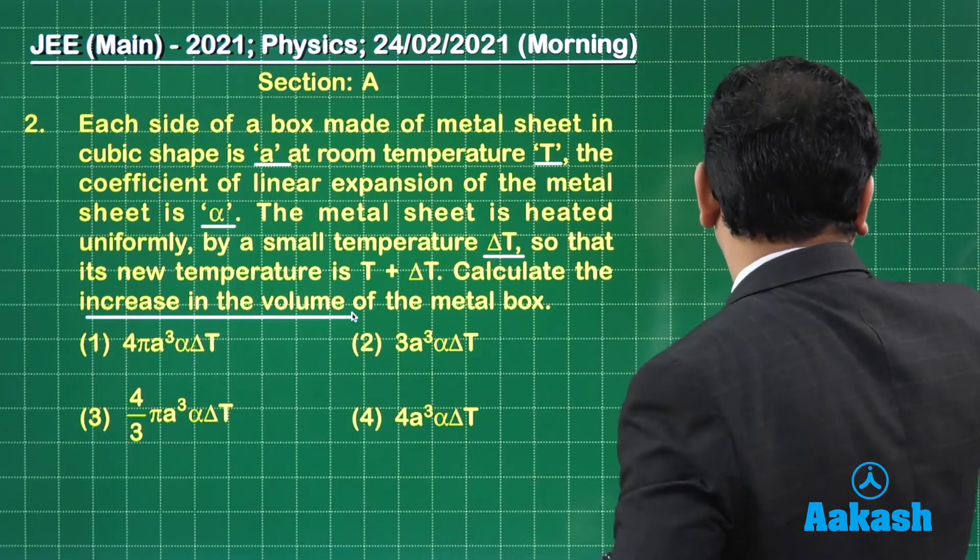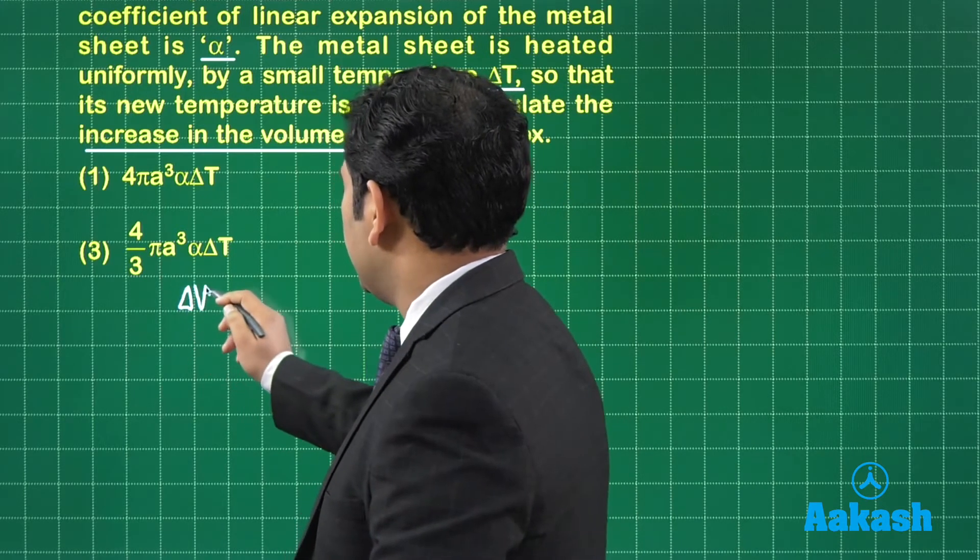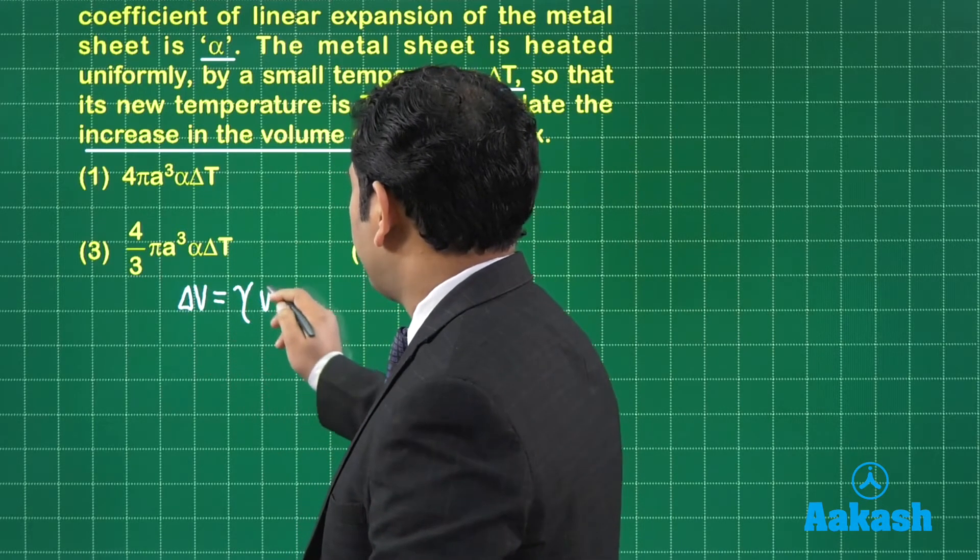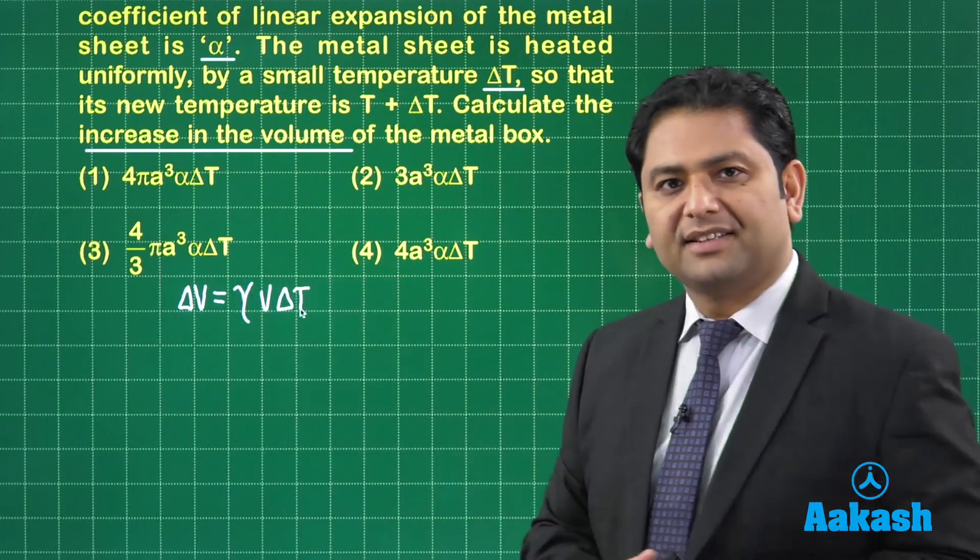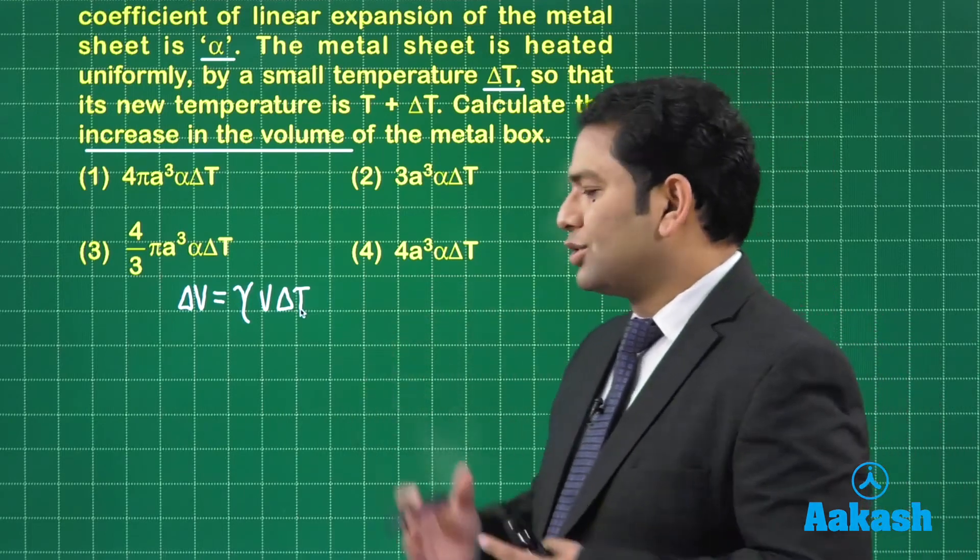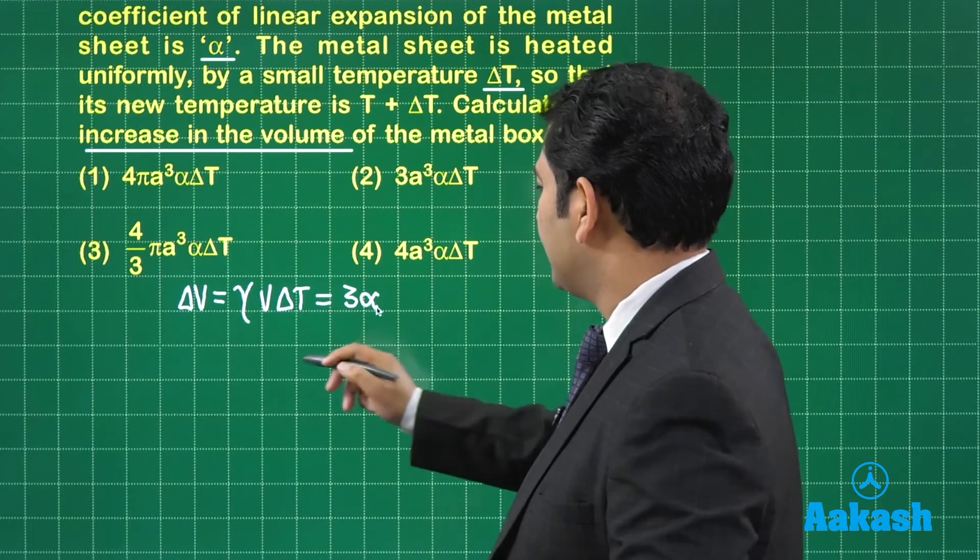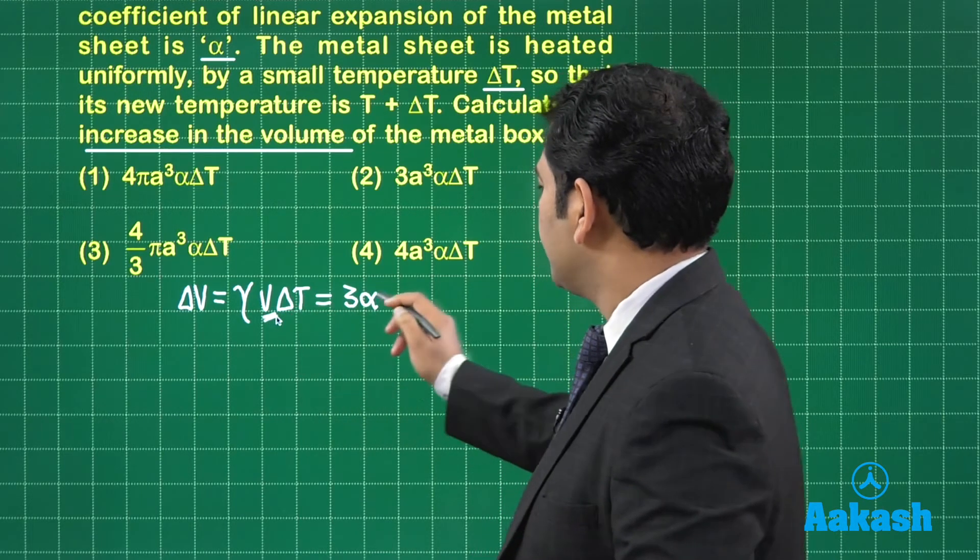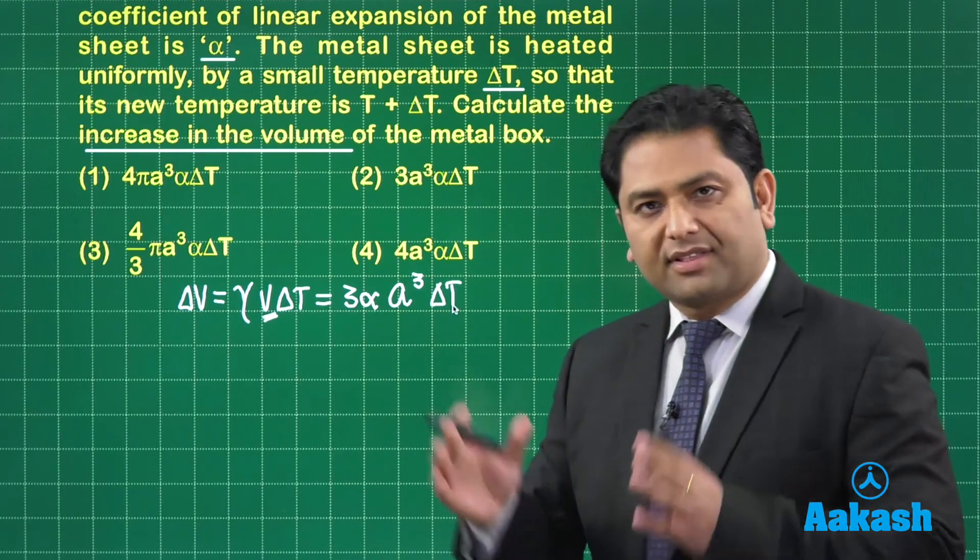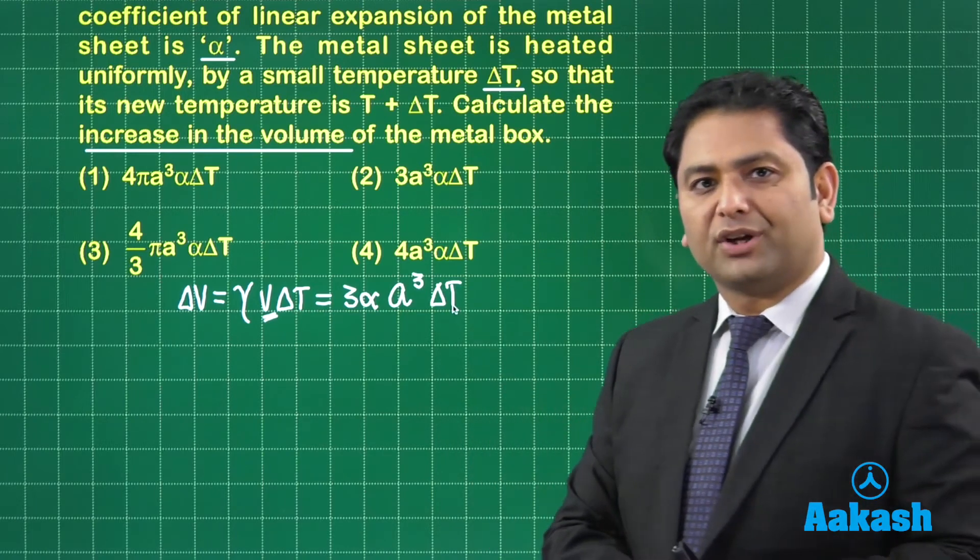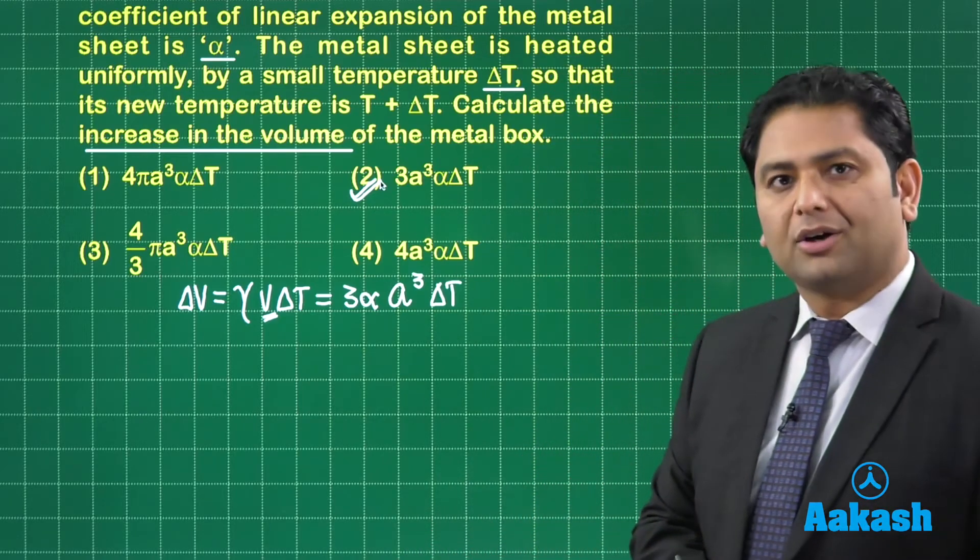So let's see how we are going to calculate that. Delta V is equals to gamma V delta T, where gamma is the coefficient of volumetric expansion. But the value of gamma has not been given, but it is very easily related. Gamma is equals to 3 alpha. The original volume, of course, is A cube and the temperature change, that's delta T. So this is the increase in volume. And where do I find it? I find it in option number 2. So that's the correct option.